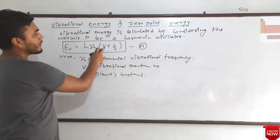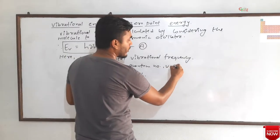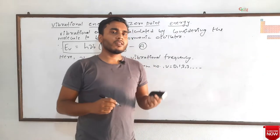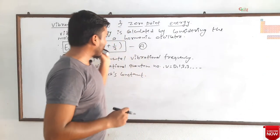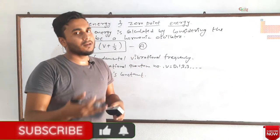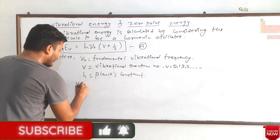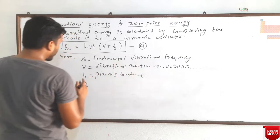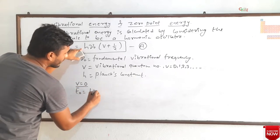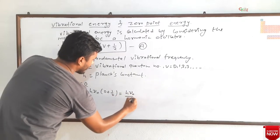The vibrational quantum number V can be equal to 0, 1, 2, 3 — just like the rotational quantum number. We denoted rotational quantum number by J; we denote vibrational quantum number by V. Its value starts from 0 and keeps on increasing. When V = 0, E₀ = hν₀(0 + 1/2) = hν₀/2.